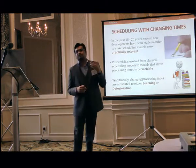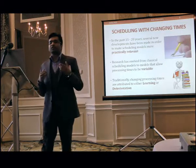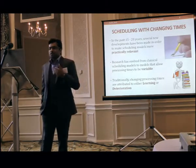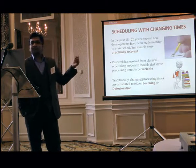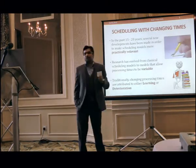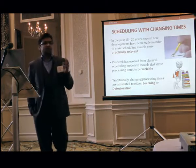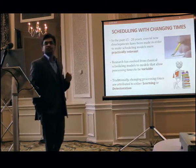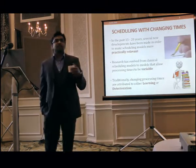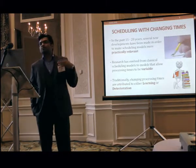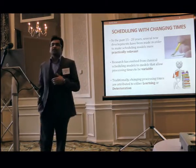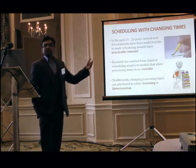In the last 15 to 20 years, there has been a lot of development in this area, and we have tried to make models more practically relevant. One of the efforts has been to make processing times variable. In classical scheduling models, all parameters were predefined. Now, we have introduced variable processing times. The main rationale is that a machine environment can undergo learning or deterioration — a deteriorating machine may take more time as more jobs are scheduled, while in a learning environment, processing times keep decreasing.